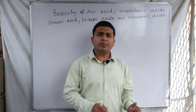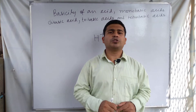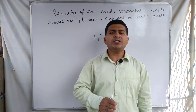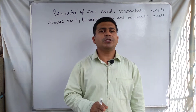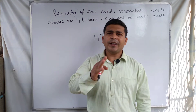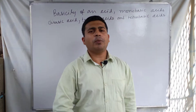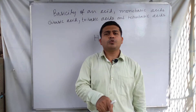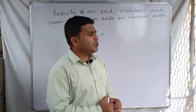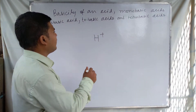Basicity of an acid means the number of H⁺ ions produced by an acid in its aqueous solution. Alternatively, we can define it as the number of OH⁻ ions that react with one molecule of an acid — that is also called the basicity of an acid. In these two ways we can define basicity, and now we discuss the types: monobasic, dibasic, and tribasic acids.